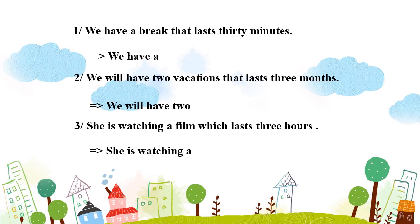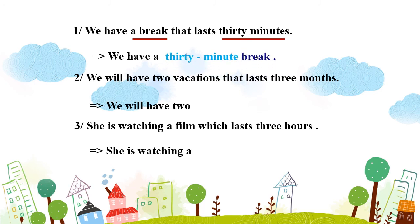Chúng ta sẽ làm bài tập về mẫu câu tính từ ghép. Câu thứ nhất: "We have a break that lasts 30 minutes." – Chúng ta có một lần giải lao mà kéo dài 30 phút. Ở đây: a break – một lần giải lao, thời gian là 30 minutes. Vậy chúng ta sẽ viết lại: "We have a 30-minute break." – Chúng ta có một lần giải lao 30 phút.